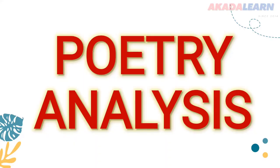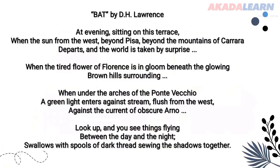Let's move on to the poetry analysis itself. I will now be reading the poem 'Bat' by D.H. Lawrence: 'An evening sitting on this terrace, when the sun from the west beyond Pisa, beyond the mountains of Carrara, departs and the world is taken by surprise. When the tired flower of Florence is in gloom beneath the glowing brown hills surrounding. When under the arches of the Ponte Vecchio a green light enters against the stream, flush from the west against the currents of the obscure Arno. Look up and you see things flying — flying between the day and the night — swallows, with spools of dark thread sewing the shadows together.'